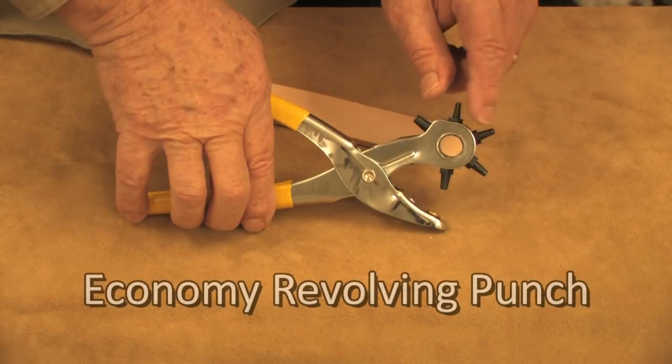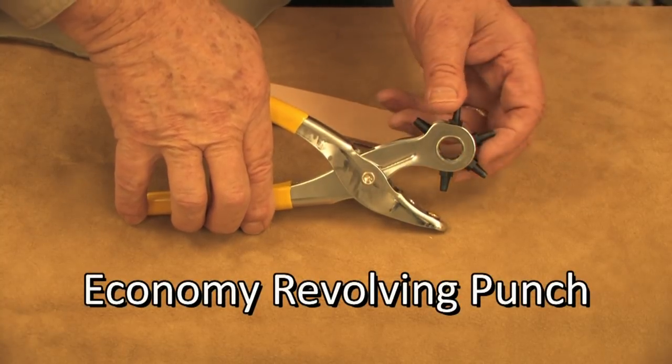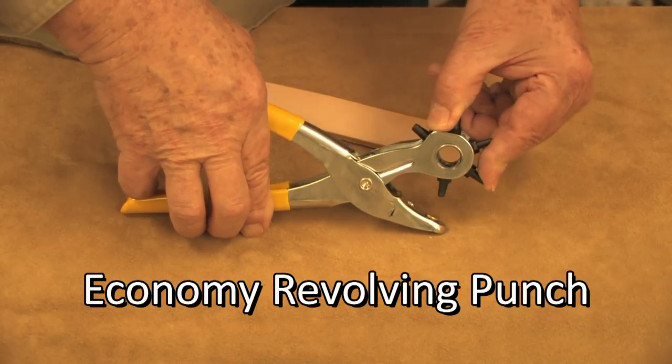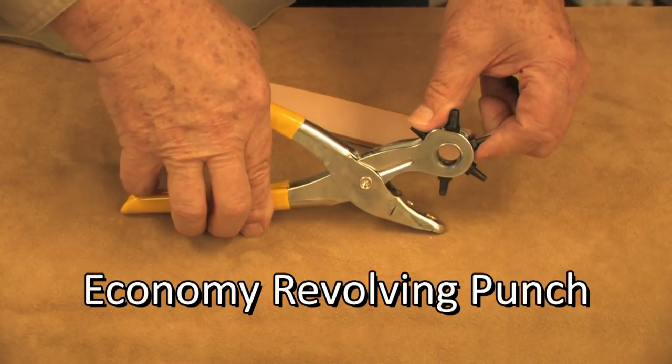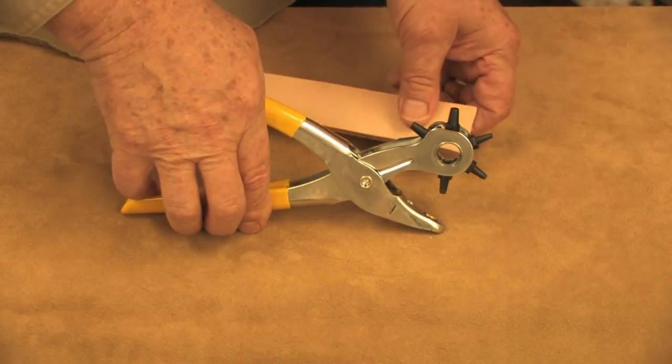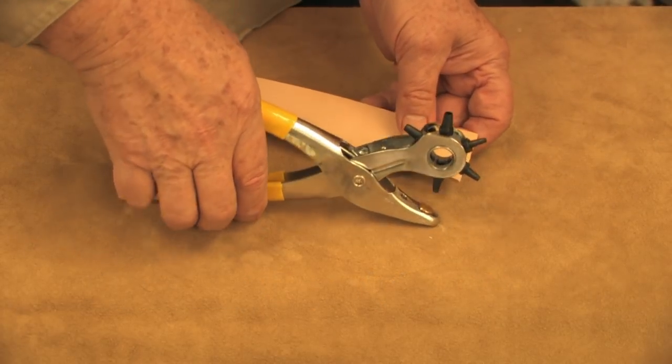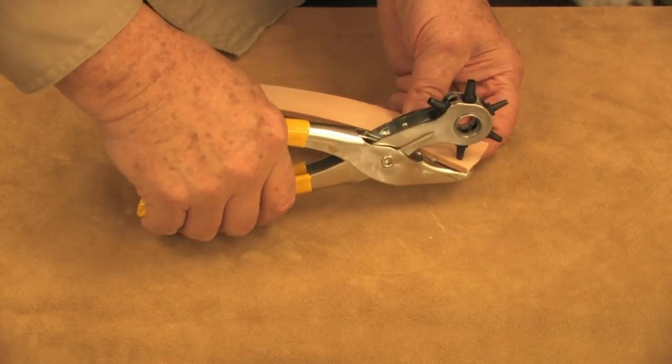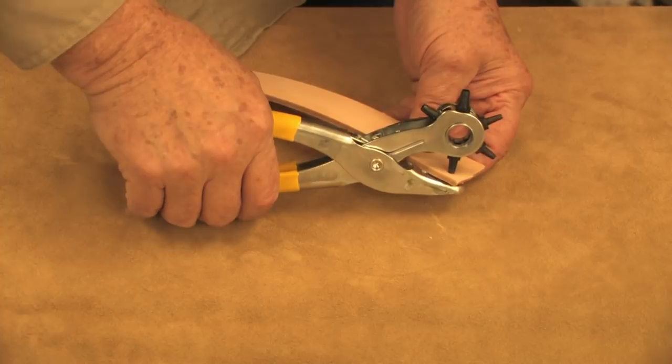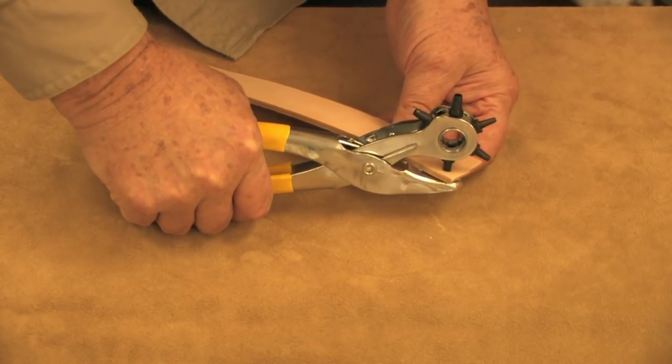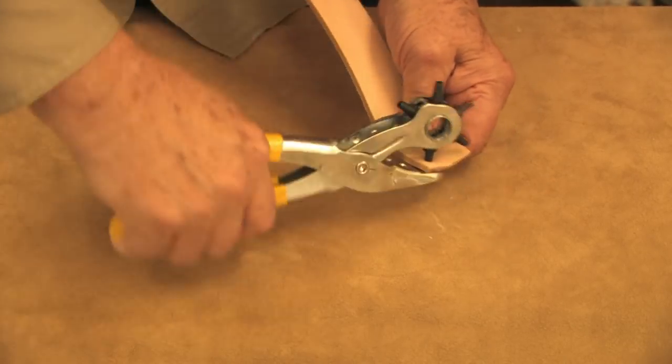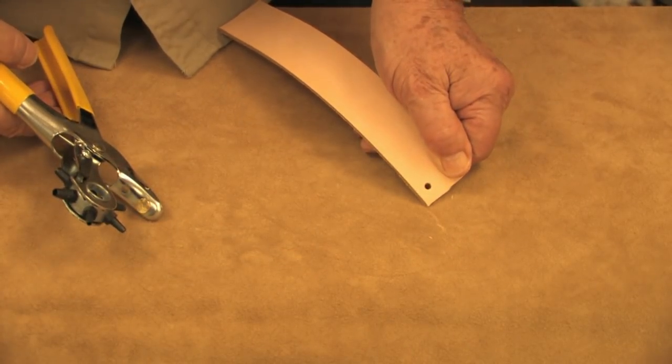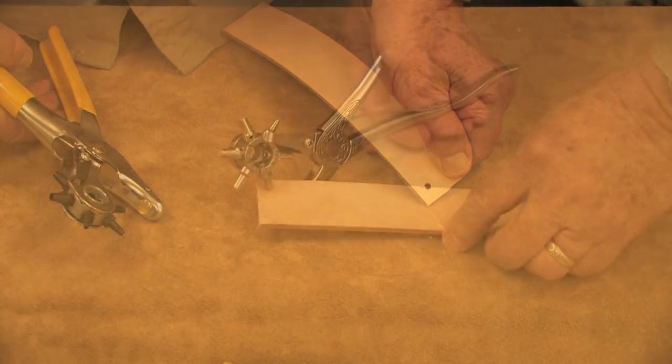I have here the economy rotary punch and you'll notice that it turns to find the right size. You'll hear it click and then back off just a little bit so that you're sure to see it properly. Now the best way to punch is locate where you want your hole to be and do a quick snap, then twist a little bit and you'll see we have a nice clean hole.